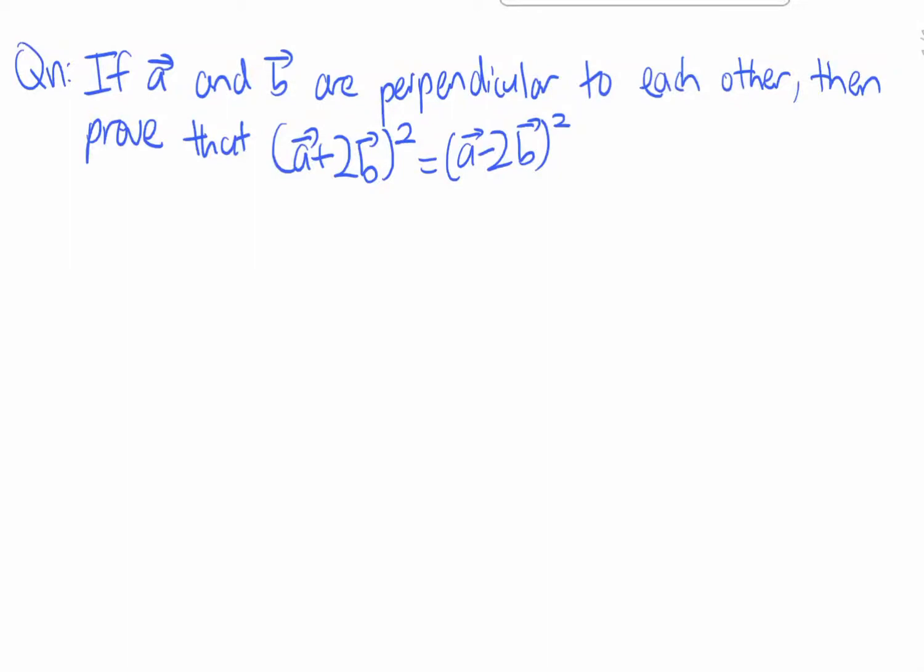Hi everyone, in this video, we are given this question in which if vectors a and b are perpendicular to each other, then we have to prove that the square of vectors a plus 2b equals to the square product of vectors a minus 2b.